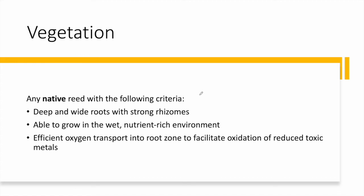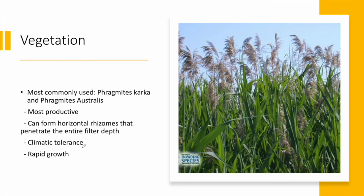For vegetation, choose a native reed with deep wide roots and strong rhizomes, capable of growing in wet nutrient-rich environments and transporting oxygen into the root zone. The most commonly used species are Phragmites karka and Phragmites australis, as they are the most productive, form horizontal rhizomes penetrating the entire filter depth, have high climatic tolerance, and a rapid growth rate.